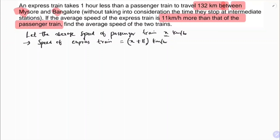Now I'll write these equations in terms of time. The speed formula is: speed equals distance upon time. So time equals distance divided by speed.